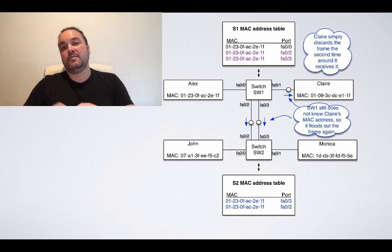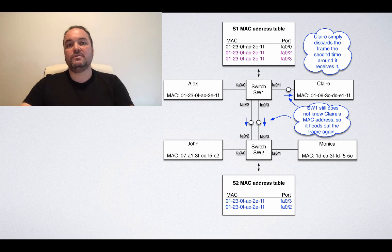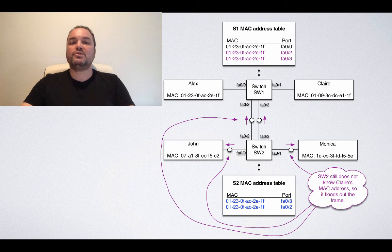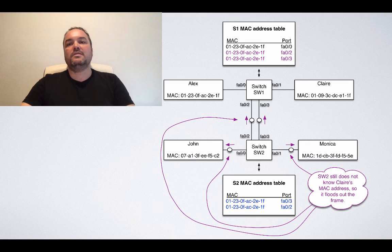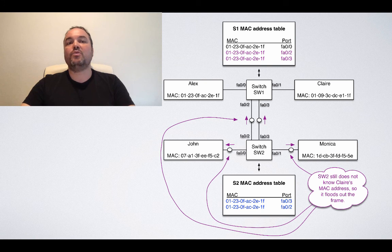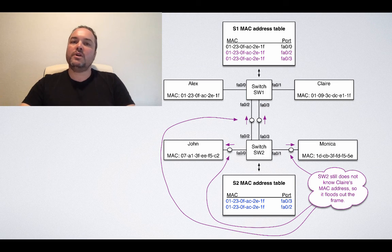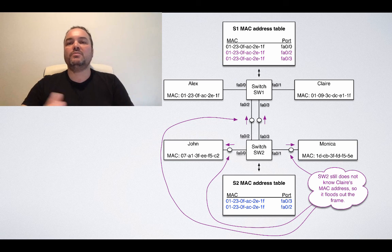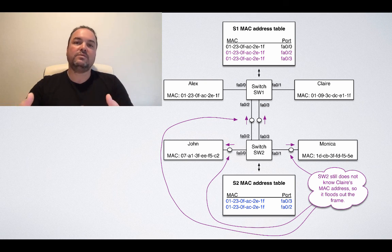The worst is that the frame goes out again on FA02 and FA03 back to SW2. As before, the frame that came on FA02 is sent back on FA03, and the frame that came on FA03 is sent back on FA02 to SW2. Now SW2 receives the frame again on both ports, FA02 and FA03, and it still doesn't know about Claire. So it needs to flood the frame out again on all ports except the port that it came from. SW2 floods the frame back out to John again on port FA00, and back out to Monica again on port FA01, and back also to ports FA02 and FA03. John and Monica, just like Claire, will be confused a little bit that they received this frame again, but will simply discard it because it's not addressed to them. However, they will need to spend some compute power to discard the frame again.